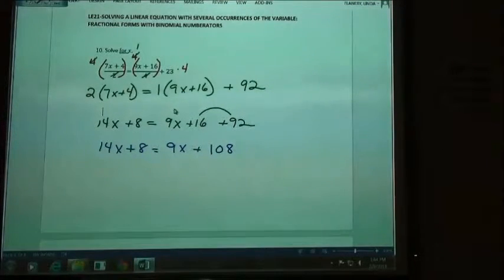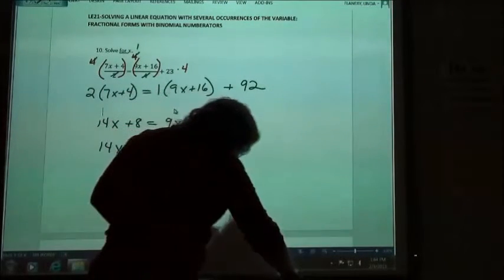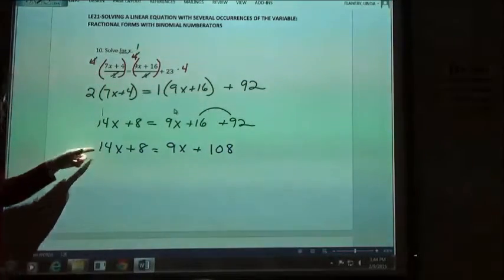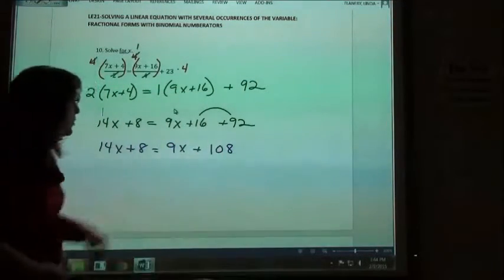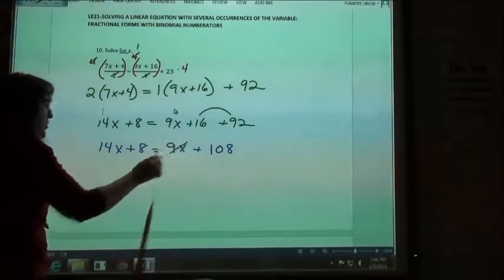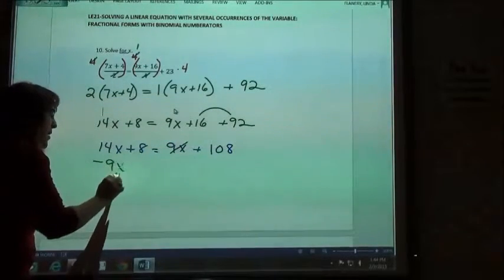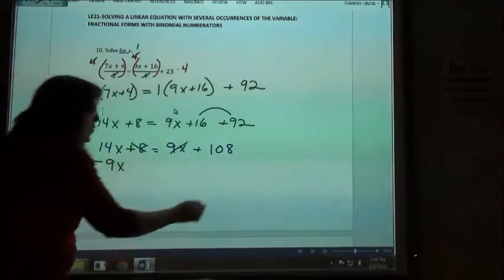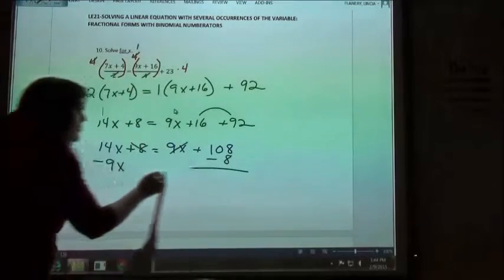Now I have one of those equations where I've got both a variable and a number on each side. Usually I like to move my variables to the left, my numbers to the right. So this is going to the opposite side, I'm going to subtract my 9x, this is going over to the opposite side, I'm going to subtract my 8.